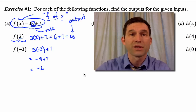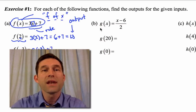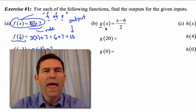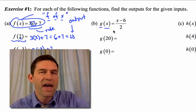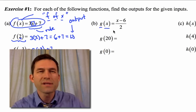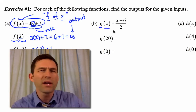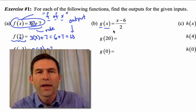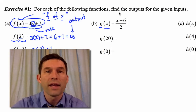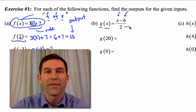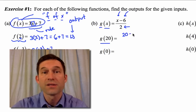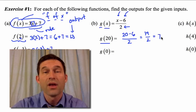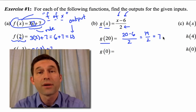The reason function notation is very confusing for students — let's illustrate with letter B — is that it appears like we're taking some variable g and multiplying it by some variable x. But g isn't a variable per se. f, g, h — they're the rule. It's saying: here's the rule for the input, and I'm going to give the rule the name g. The rule in letter B is to take the input, subtract 6 from it, and then divide that result by 2. So g of 20 means take an input of 20, subtract 6, divide by 2: we get 14 divided by 2, which is 7.